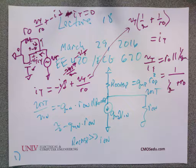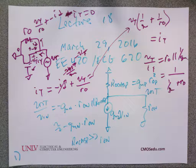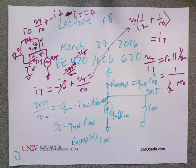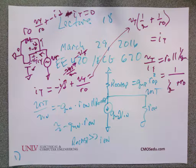G_M equals square root of 2 times I_D times beta, and use R_out equals one over lambda times whatever I_D is, and use the same lambda. That doesn't change much, but if you need something more exact, use the simulations.